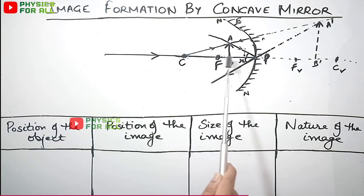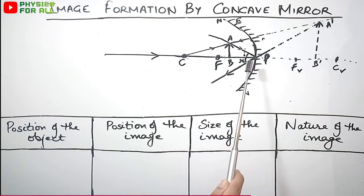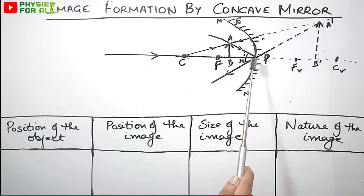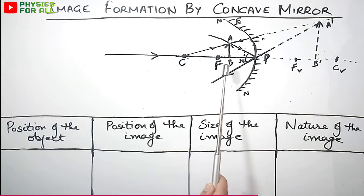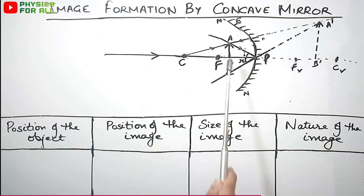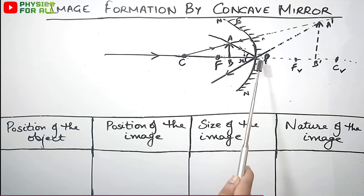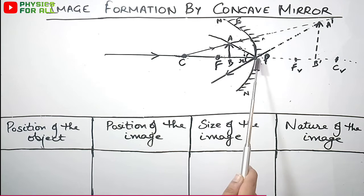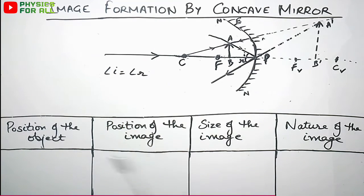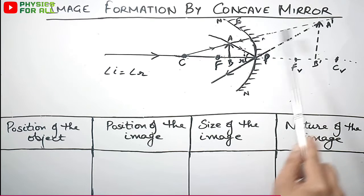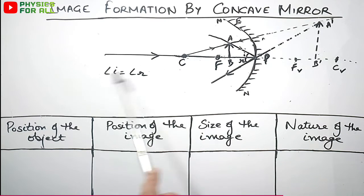Since the object is very near the pole, the rays coming from it can directly hit the pole. In no other previous case was the object close enough for this. Now one ray will pass through the pole. When a ray hits the pole, it follows the law of reflection where angle i equals angle r, and gets reflected accordingly.